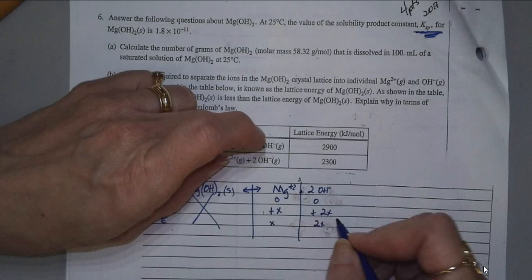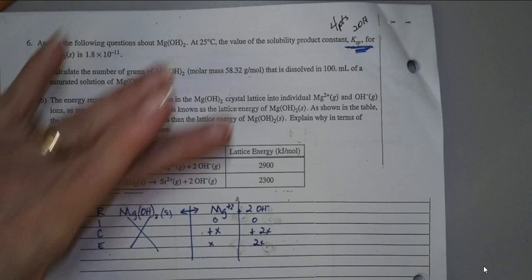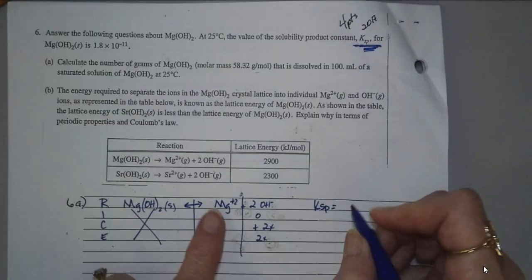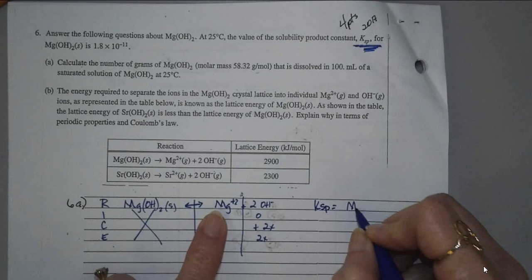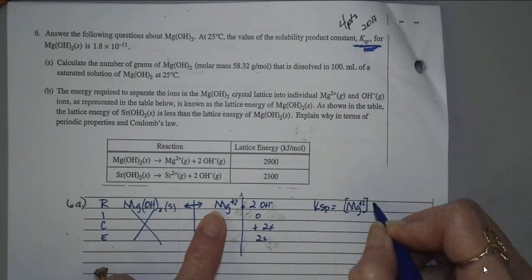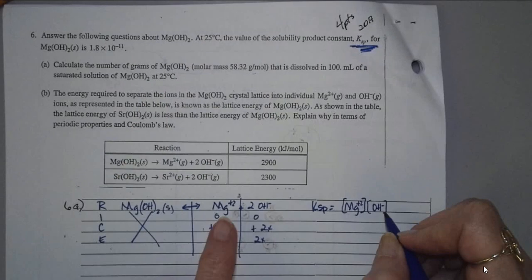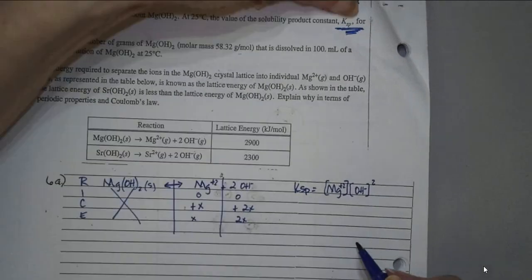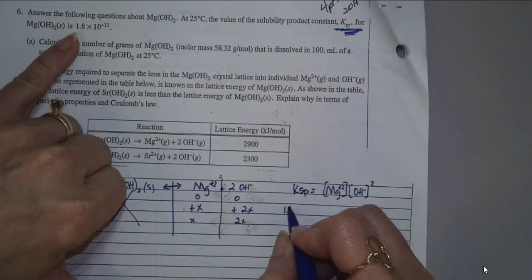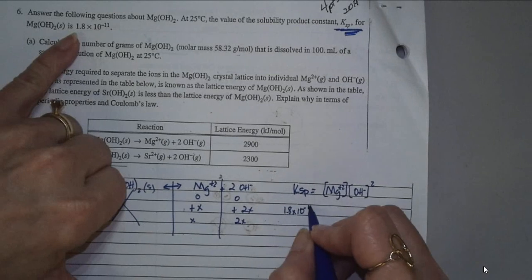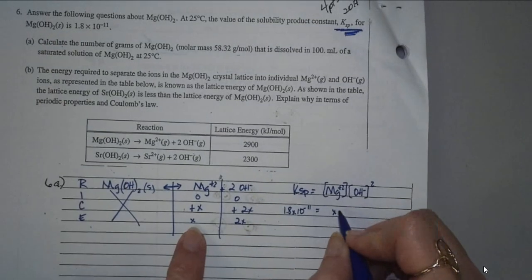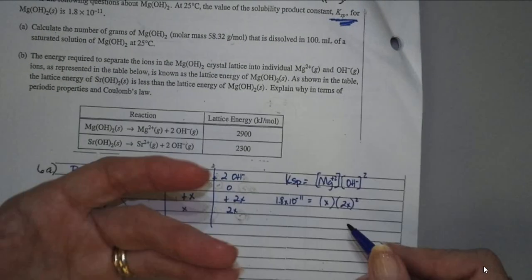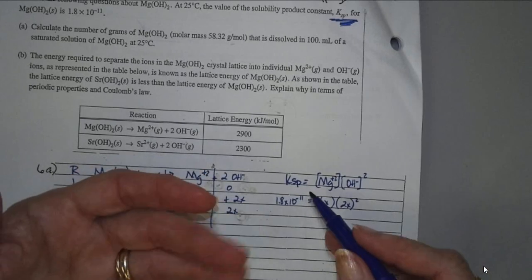The second thing you want to do is always write the equilibrium expression. So we have KSP is equal to the concentration of the magnesium ion times the concentration of the hydroxide ion, and it's squared because there are two of those in the balanced equation. Plug your numbers in. They gave us KSP is 1.8 times 10 to the negative 11, and then we have x times 2x squared. There's no plus x or minus x, so we don't have to worry about ignoring something because this little KSP number is so small.